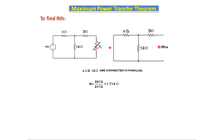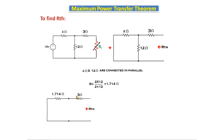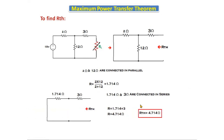Using the parallel formula R1·R2/(R1+R2), we get 2 into 12 divided by (2 plus 12), which gives 1.714 ohms. Replacing those two resistors with the single equivalent resistor, we now have 1.714 ohms connected in series with the 3-ohm resistor. Adding them gives Rth equals 1.714 plus 3 equals 4.714 ohms.